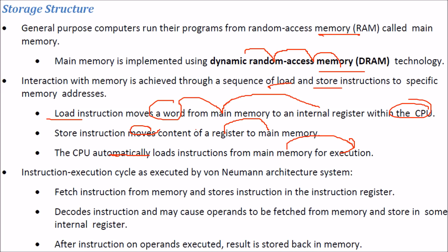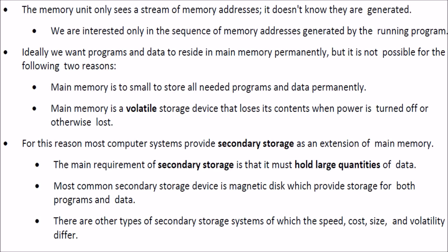In the instruction execution cycle, instructions are first fetched from memory and stored in the instruction register, then decoded to identify operands and which internal registers are needed. After execution, results are stored back into memory. The memory unit only sees memory addresses — it doesn't know how or where they were generated, only the sequence of addresses produced by the running program.